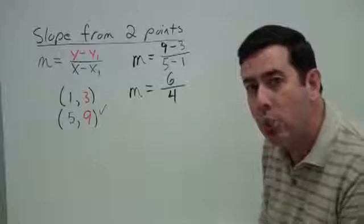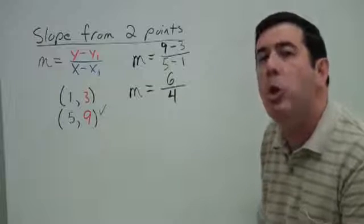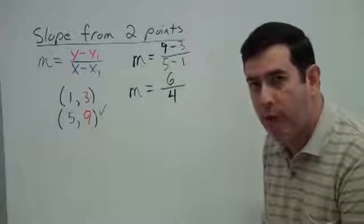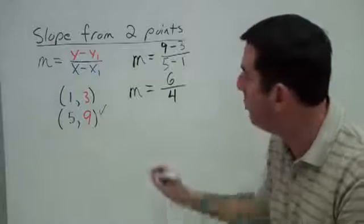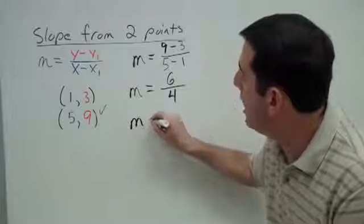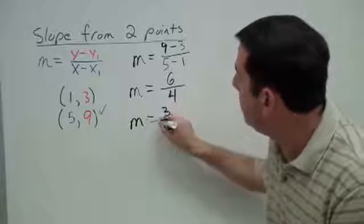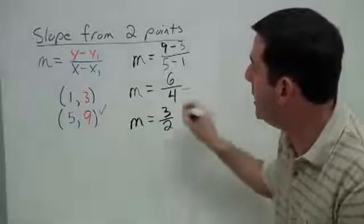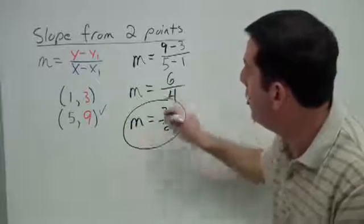And now this fraction will reduce. We should always reduce fractions as much as possible. A common 2 can be taken out, and so the slope of this particular line is 3 halves.